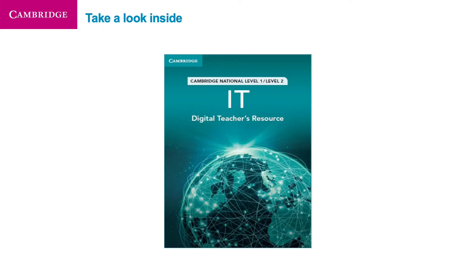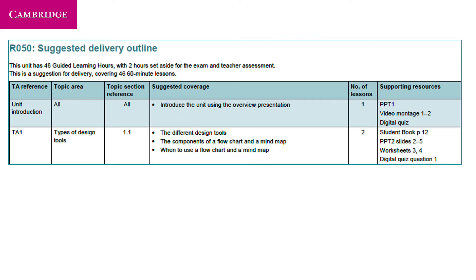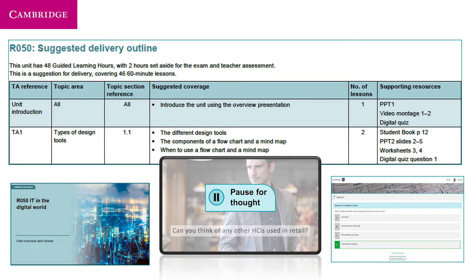Let's take a deeper look inside one of our Teacher's Resources. This is the Teacher's Resource for IT, but the approach is the same for all of the Teacher's Resources. The first thing to do is to take a look at the delivery plans. We recognise the diversity in vocational classrooms and that how you deliver your Cambridge National Course will vary from the way other schools deliver it. Therefore, whilst we have provided an exemplar delivery plan for each unit to help with your planning, the delivery plan is customisable so you can make it your own. Each delivery plan suggests an appropriate number of lessons to support that unit's guided learning hours, and a list of supporting resources helps you to easily find what you need to deliver that session.